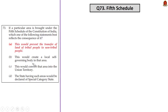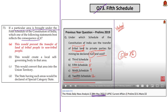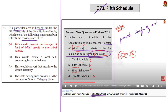Question 73 is about the 5th Schedule of the Constitution — specifically the consequences when a particular area is brought under it. On our 28th May 2022 analysis, a similar question was discussed involving the declaration of transfer of tribal land to private parties for mining as null and void. From this, we can infer that bringing an area under the 5th Schedule prevents the transfer of land of tribal people to non-tribal people. This is a very direct question requiring knowledge about the 5th Schedule.